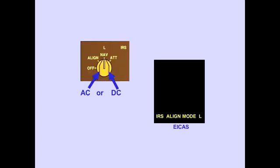If power is restored, the EICAS memo message, IRS align mode, is displayed. Remember, while in motion, the IRS cannot realign.